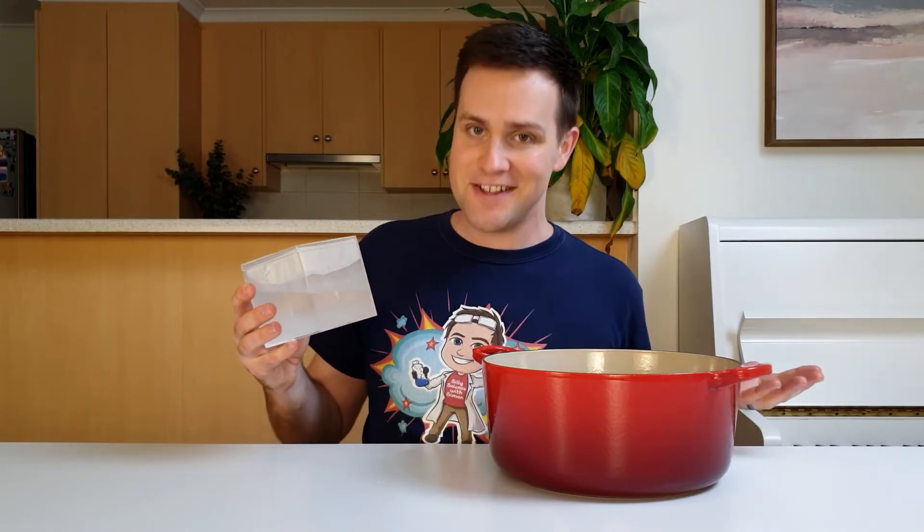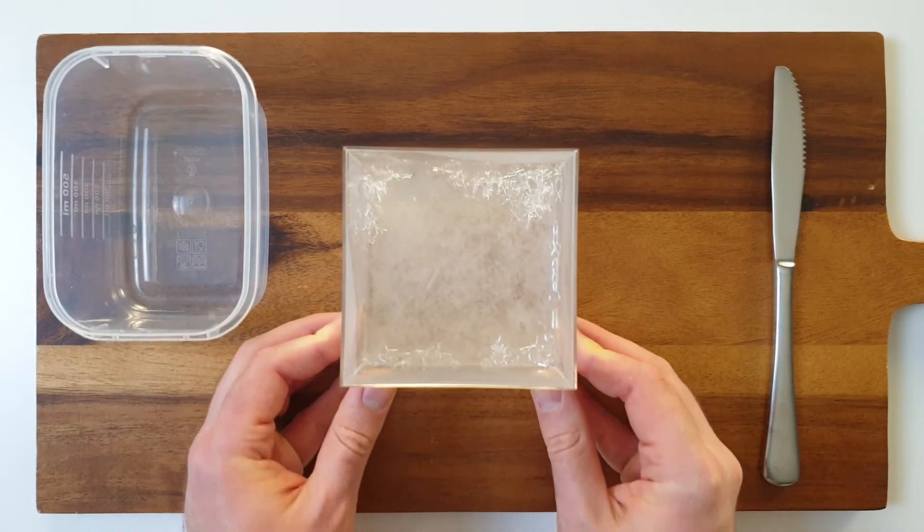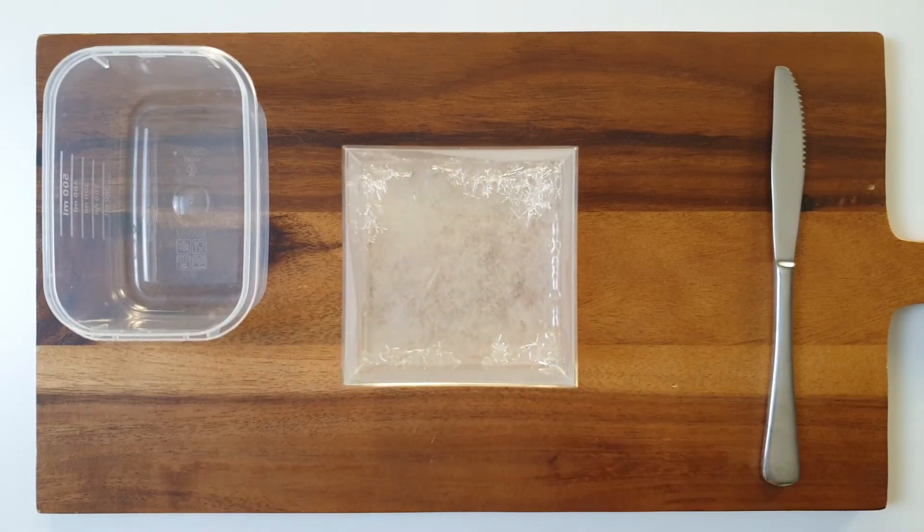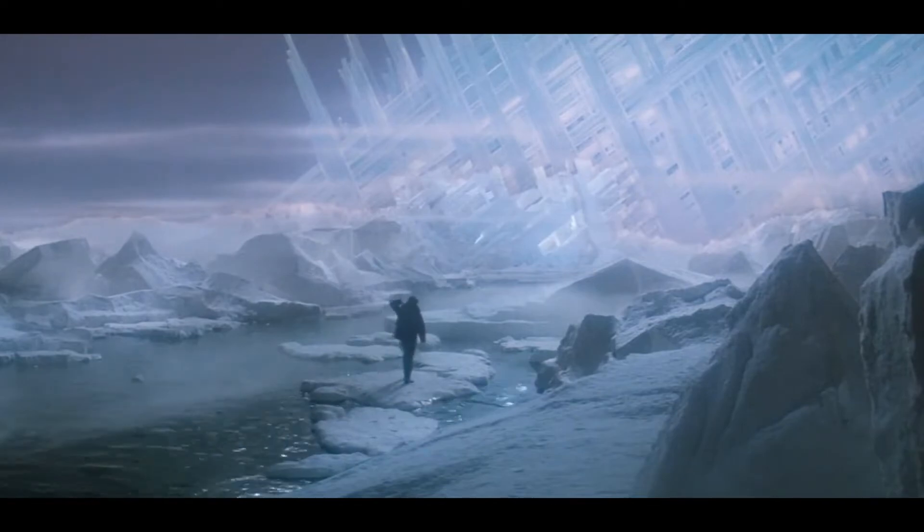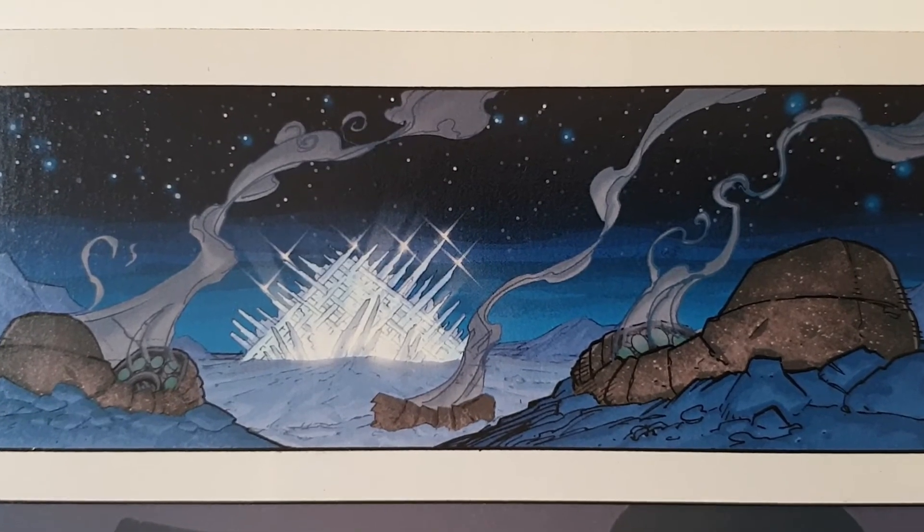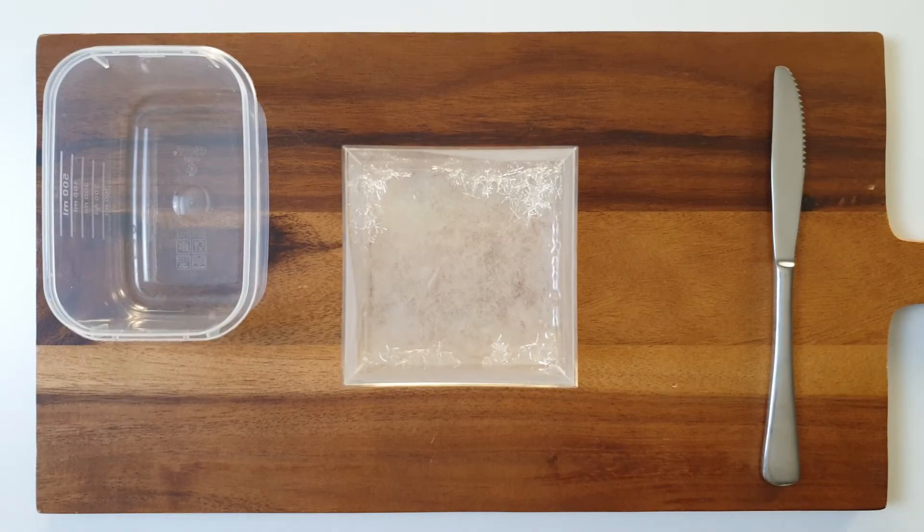But I'm going to try to make them look a bit more like the Fortress of Solitude. Because the crystals grew in a square container, they've taken the shape of a square. I couldn't find an above shot of the fortress, but judging by this shot in the movie, and this graphic in the comics, I'm thinking it might be something like this.